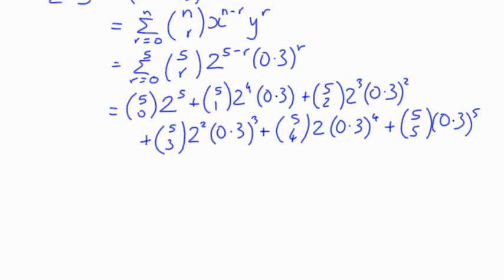We can always check that we've got this right by adding up the powers each time, and we should always add up to 5. We've got 5 there, 4 and 1, 3 and 2 is 5, 2 and 3 is 5, 1 and 4 is 5, and 5. It's a nice spot check to make sure you've got it right.